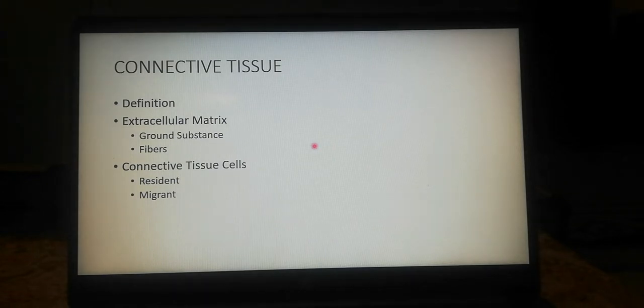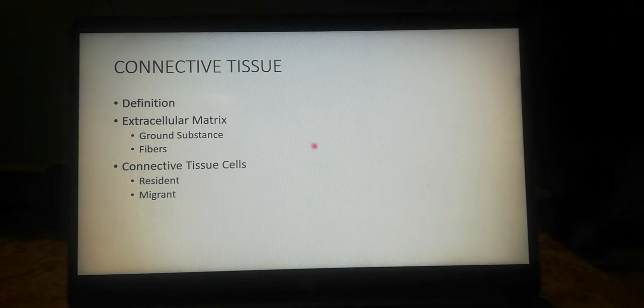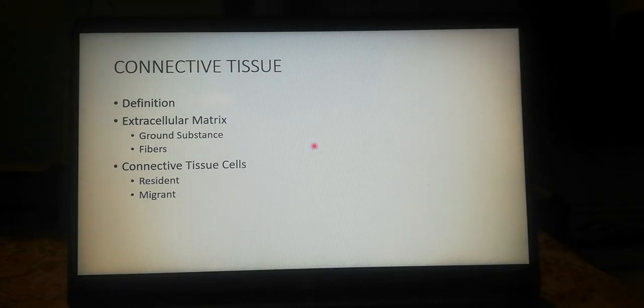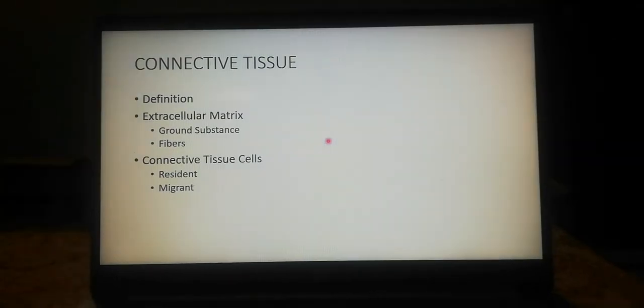The extracellular matrix consists of ground substance, which is proteoglycans and glycoproteins, and fibers composed of proteins. There are three types of fibers: collagen fibers, reticular fibers, and elastic fibers. Connective tissue cells are of two types: resident cells and migrant cells. Resident cells develop and remain within the connective tissue. These include fibroblasts, myofibroblasts, adipocytes, and mesenchymal stem cells. Migrant cells enter the connective tissue from the bloodstream and include macrophages, mast cells, plasma cells, and various types of white blood cells.